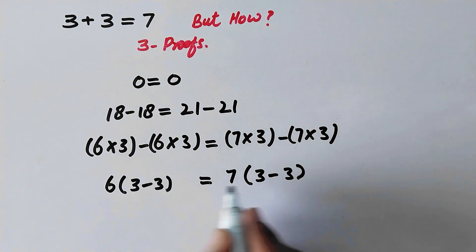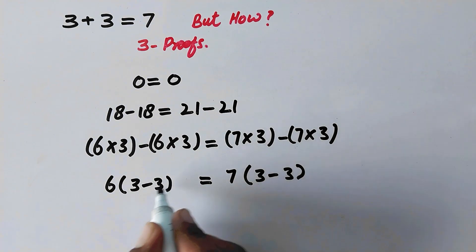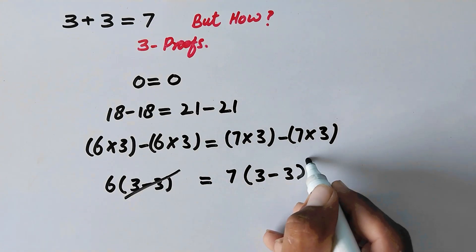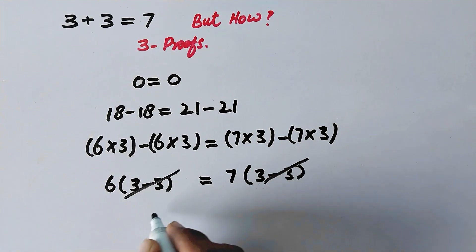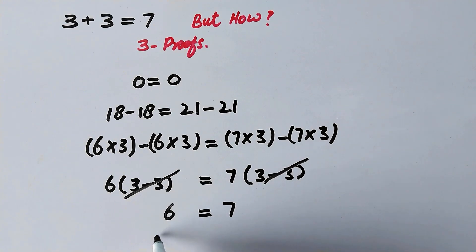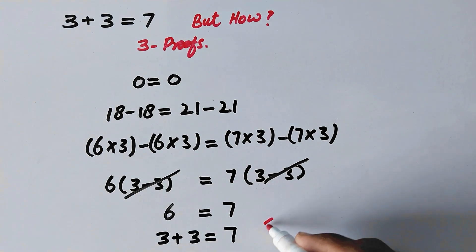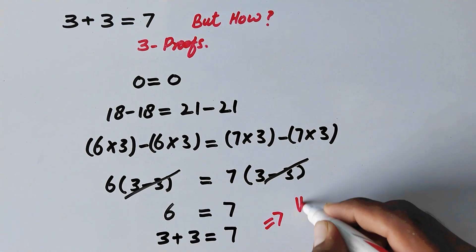Now, (3 minus 3) is the same on both sides, so they cancel each other, and we are left with 6 is equal to 7, or we can write this 6 as 3 plus 3 is equal to 7. That's our third proof.